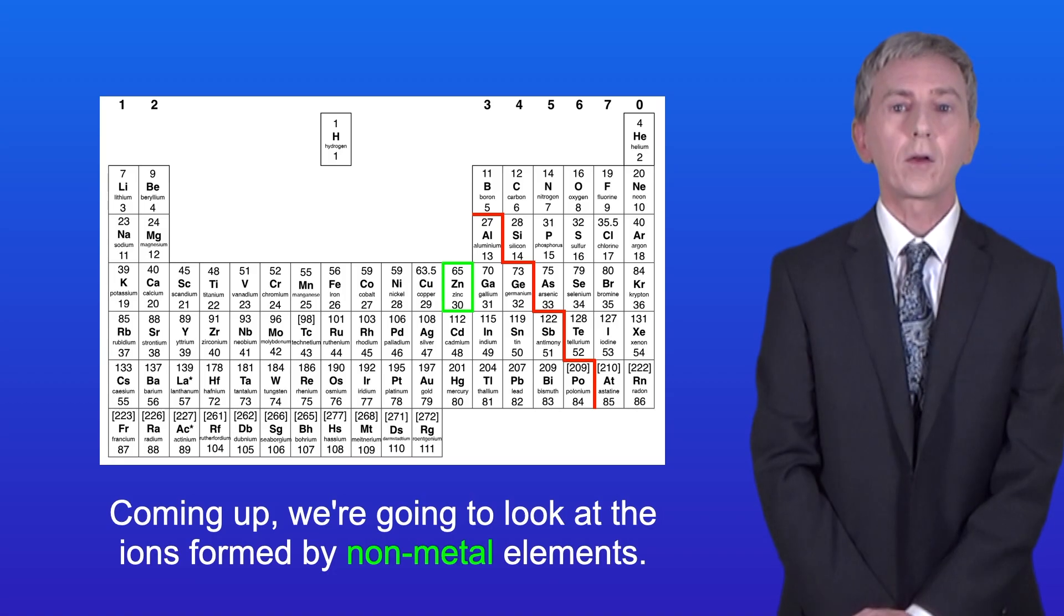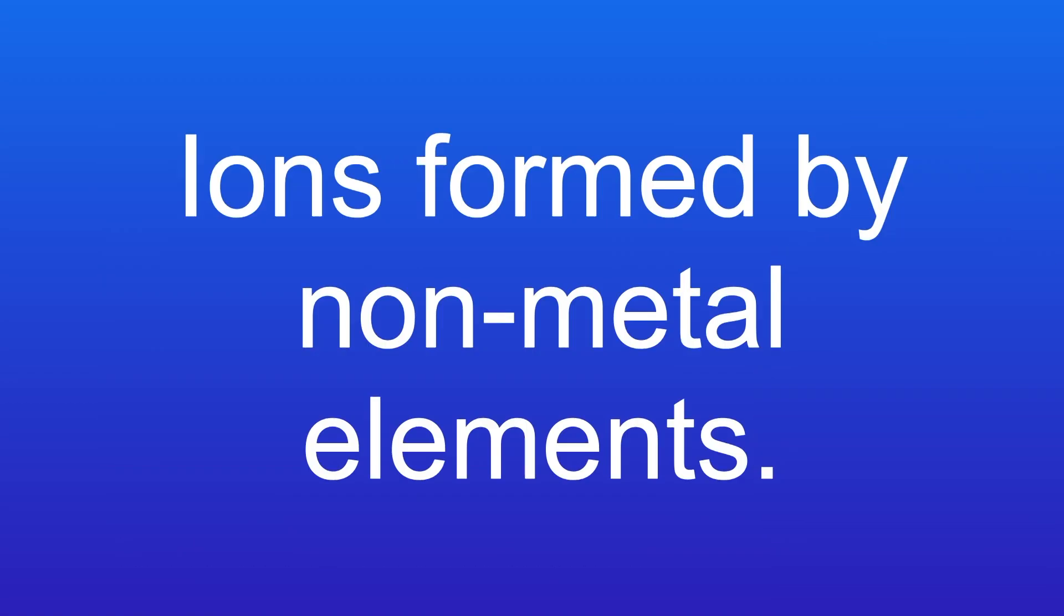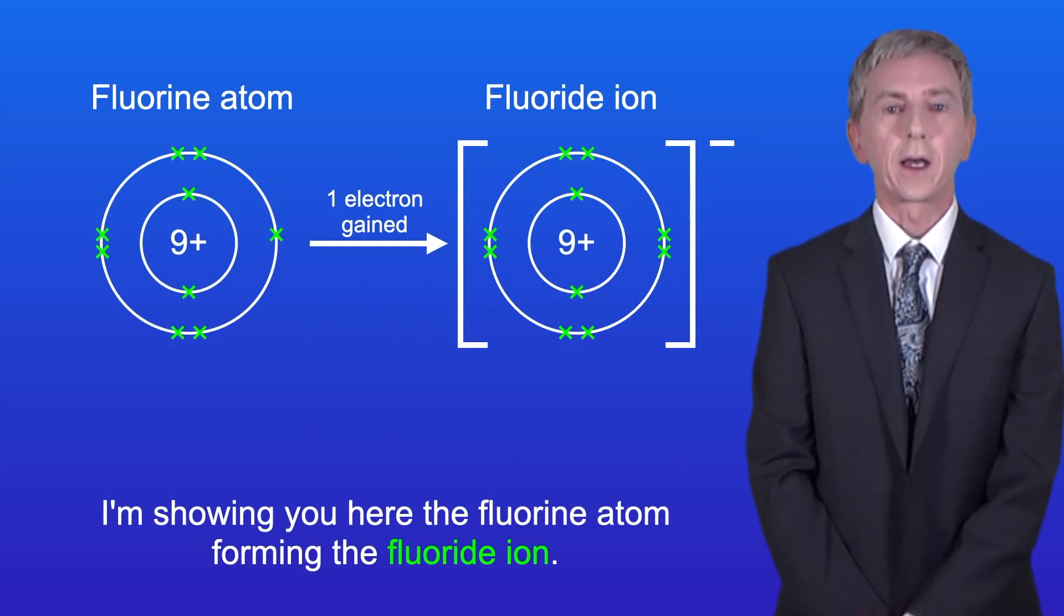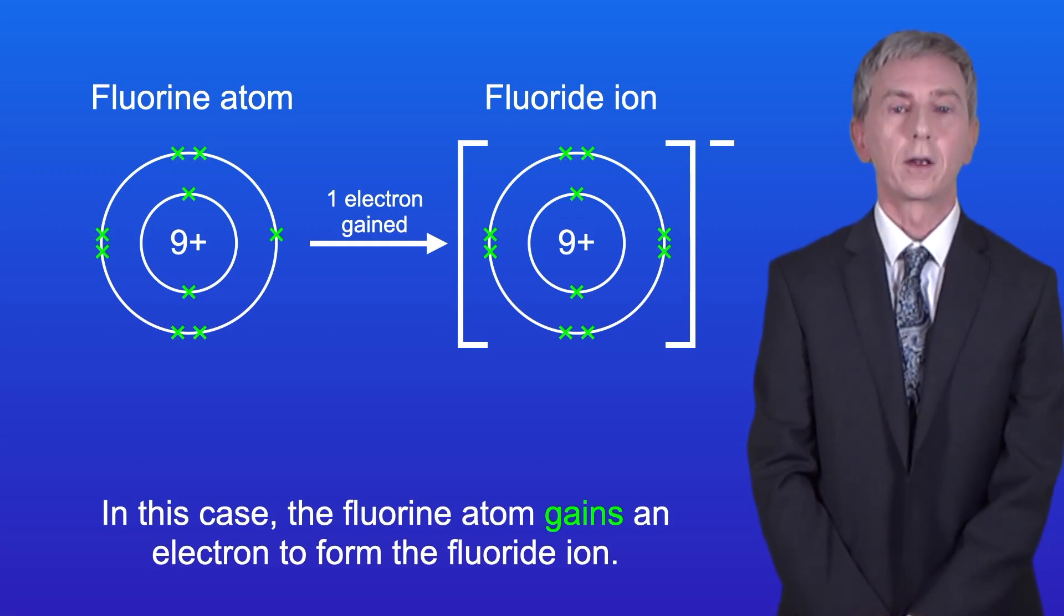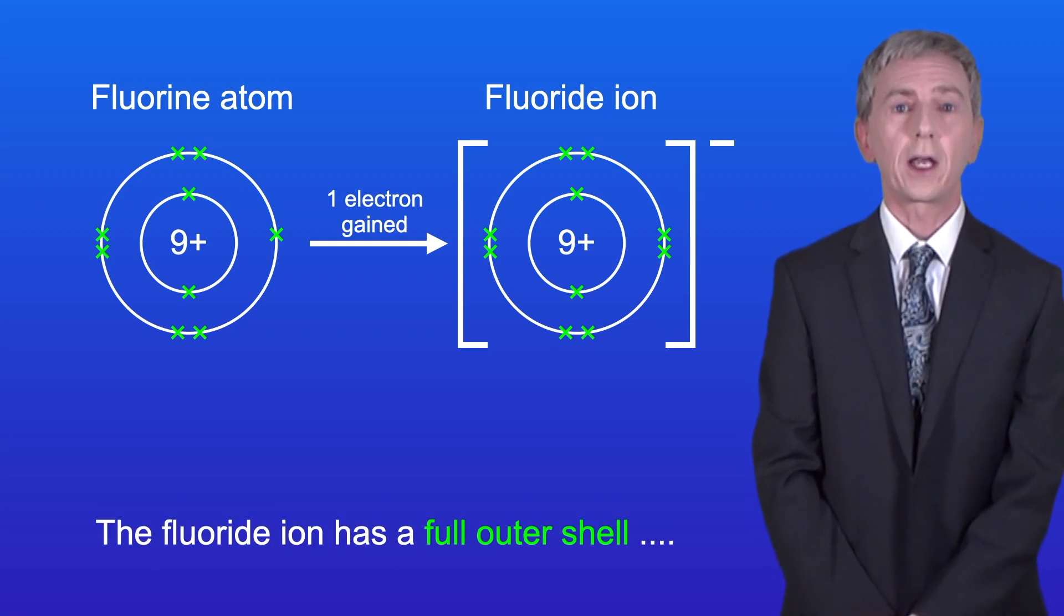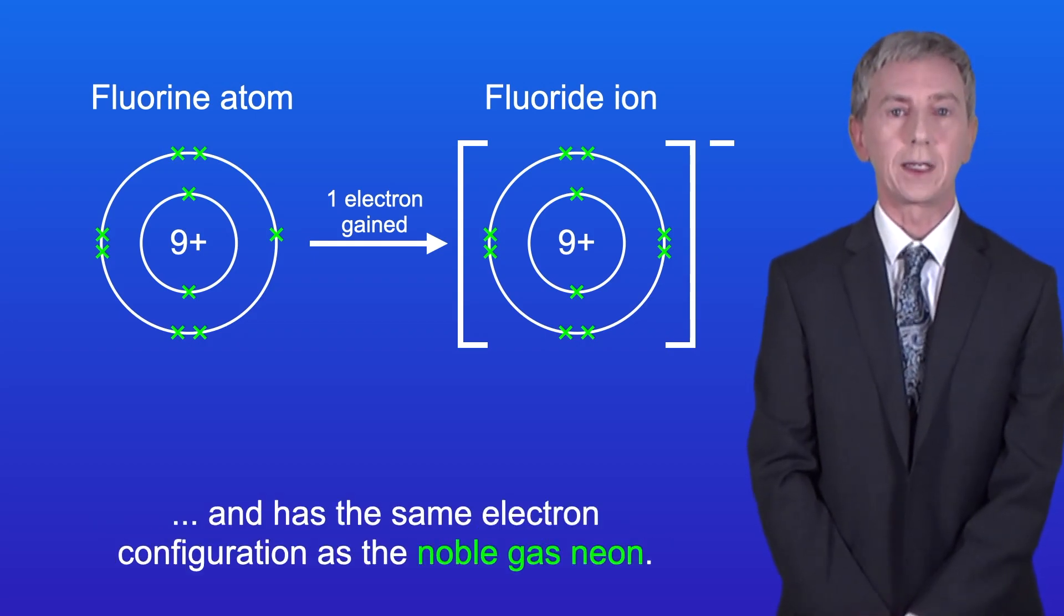Coming up we're going to look at the ions formed by non-metal elements. Okay, I'm showing you here the fluorine atom forming the fluoride ion. In this case the fluorine atom gains an electron to form the fluoride ion. The fluoride ion has a full outer shell and has the same electron configuration as the noble gas neon.